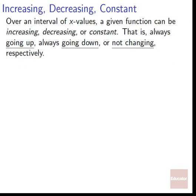The first property: increasing, decreasing, constant. Over an interval of x values, a given function can be increasing, decreasing, or constant — that is, always going up, always going down, or not changing. The output will always be increasing, always decreasing, or not changing as we move through those x values. This is much easier to understand visually, so let's look at it that way.